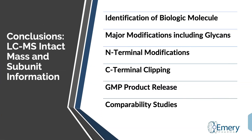In summary, the LC-MS analyses of intact and subunit biologic molecules are simple analyses which characterize detailed modifications of complex molecules. This information-rich study is useful throughout the product development cycle, from research to commercialization, including GMP product release, comparability, and characterization studies. While our work utilized a modern high-field Orbitrap, the method can be transferred to a low-cost mass spectrometer, such as a single quadrupole instrument. The low-cost mass spectrometers can be affordable for QC labs. Thus, the intact LC-MS analyses can be utilized in ID tests and commercial release testing.